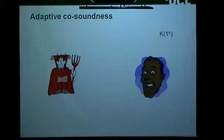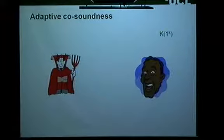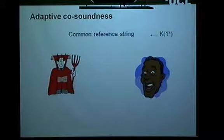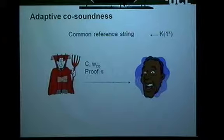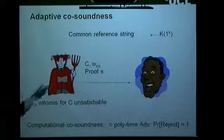What we can prove is something called adaptive co-soundness. Essentially, what adaptive co-soundness says is that the adversary cannot give a proof for a statement that it knows is false. We don't rule out the case where an adversary gives a proof for a false statement as long as the adversary has no clue that it's actually a false statement, but it cannot knowingly give a proof for a false statement. We define it as follows: we generate the common reference string, the adversary comes out with a circuit and a co-witness for the circuit being unsatisfiable — so now we're looking at languages in NP intersect co-NP — and a proof, and we say it's co-sound if the probability of rejecting here is roughly one.